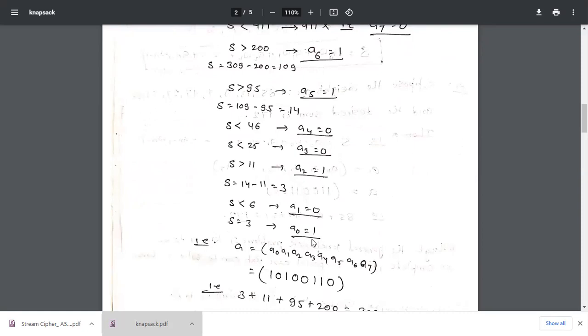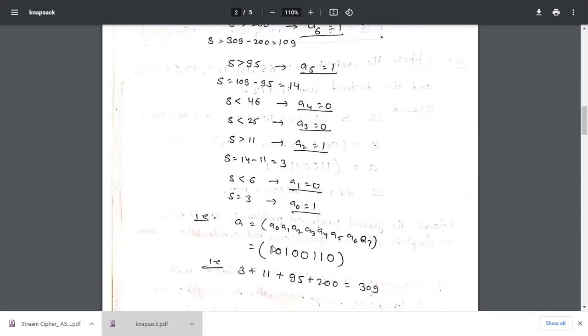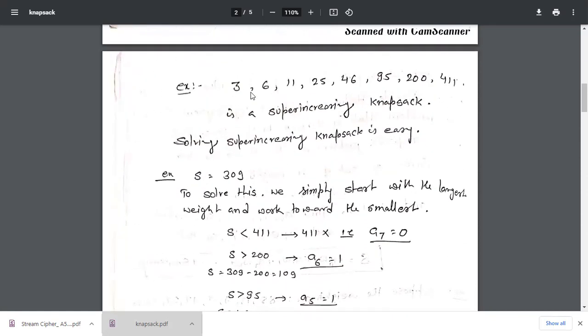Finally, if we arrange a0, a1, a2 to our expected value, then it will be written as 10100110.